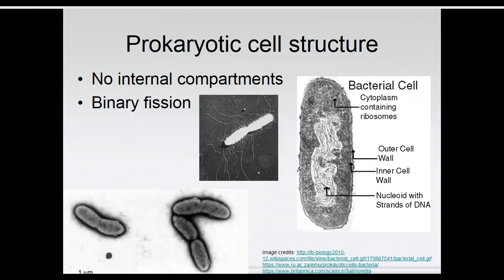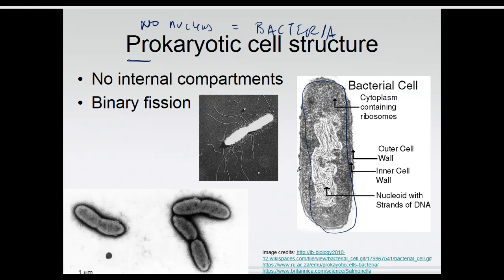Let's talk about some of the ultrastructure we can see, especially with electron microscopes. Prokaryotic cells — remember pro rhymes with no — are things without a nucleus, basically bacteria cells. These have no internal compartments. They still have things floating around inside their cells, but there aren't any compartments wrapped up in membrane bubbles. That is the one big difference between prokaryotic and eukaryotic cells.